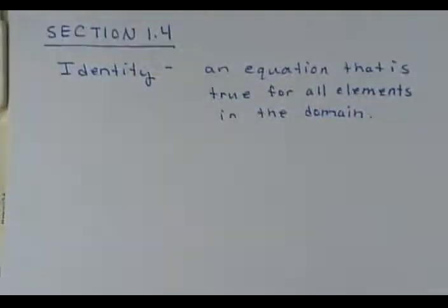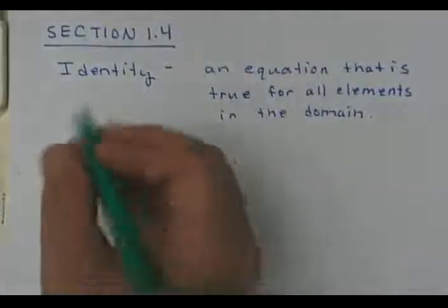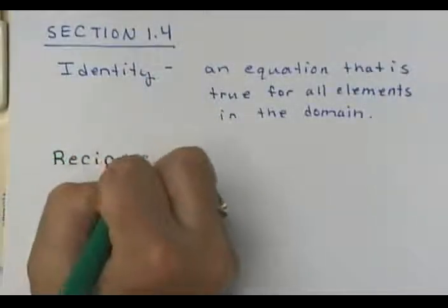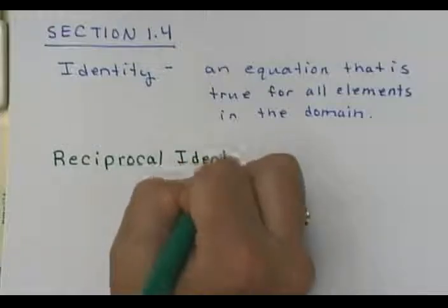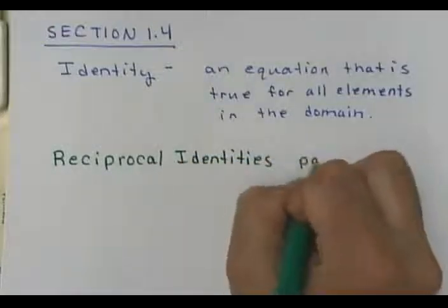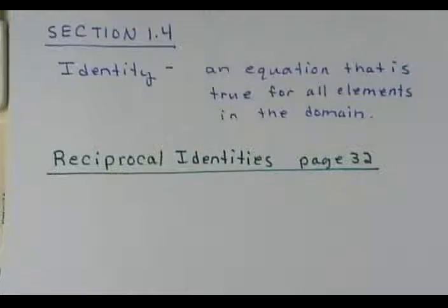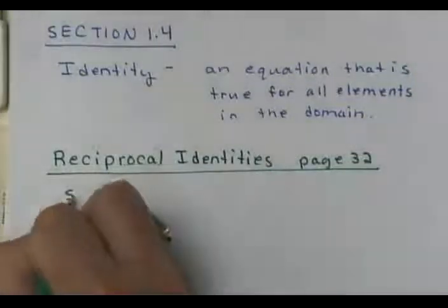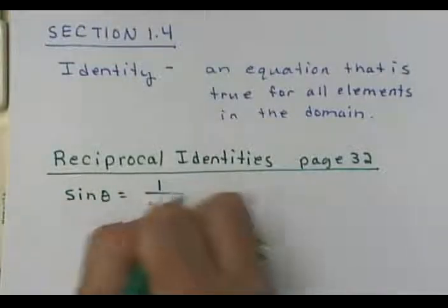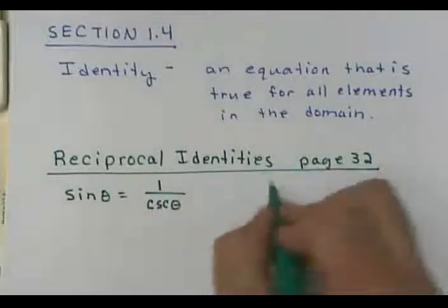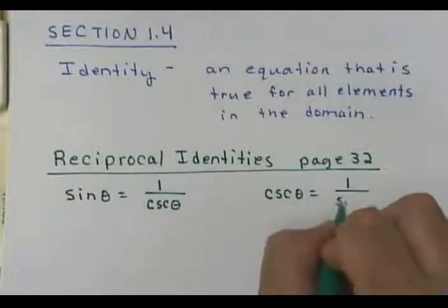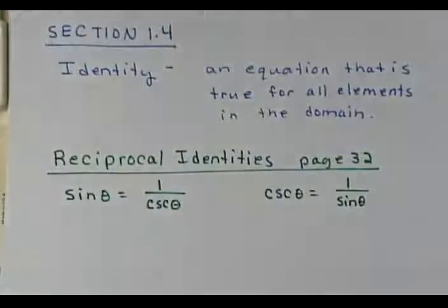We've already looked at a couple of identities from the previous section, and they're here in your book on page 32 — the reciprocal identities. The sine of theta is equal to 1 over the cosecant of theta, which means the cosecant of theta has to be equal to 1 over sine theta. Sine and cosecant are reciprocals of each other.